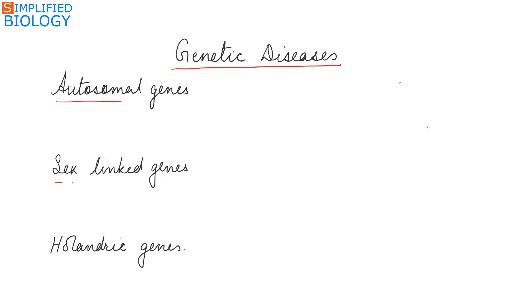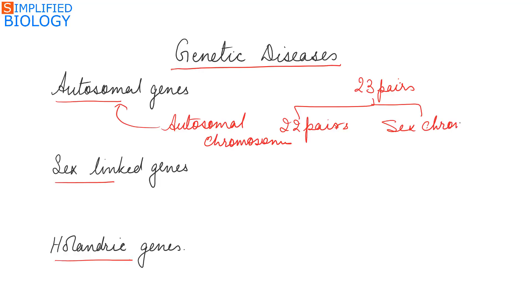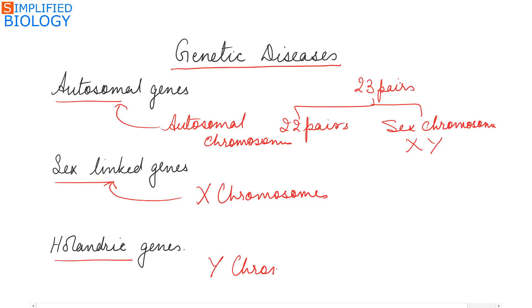Before going to genetic diseases, let's see what are autosomal genes, sex-linked genes, and hollandric genes. Humans have 23 pairs of chromosomes. Of the 23 pairs, 22 pairs are autosomal chromosomes that have the autosomal genes, and the one remaining pair is the sex chromosomes, which have the X and Y chromosomes. Genes present on the X chromosome are known as sex-linked genes, while genes present on the Y chromosome are known as hollandric genes.